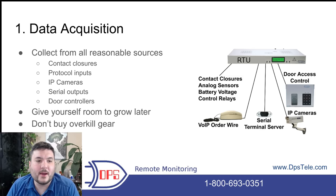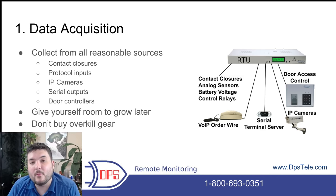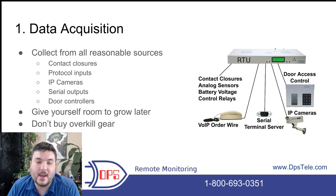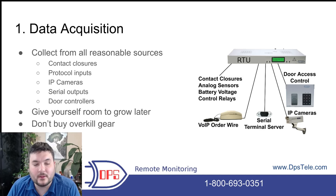Getting deeper into data acquisition — you want to collect information from all reasonable sources, but don't go overboard. Contact closures are common: if you have a piece of gear that latches a relay to tell you it's running, overheating, or has a high noise level, most equipment manufacturers will give you at least a few relays to signal a problem. If your RTU has discrete inputs, you can wire those in and monitor them. Protocol inputs are similar but based on a communications protocol instead of a physical contact closure — the device sends a message, your RTU picks it up and processes it, and some messages can go straight to the master.